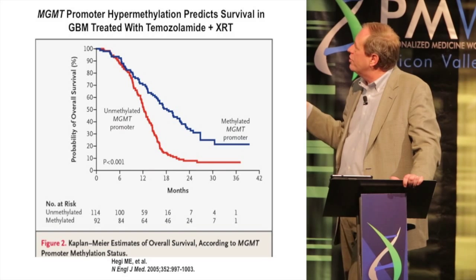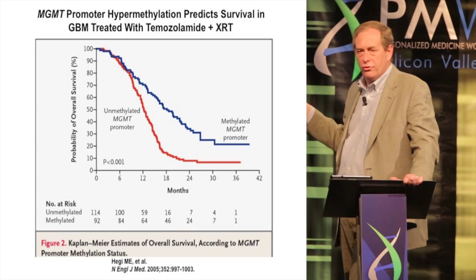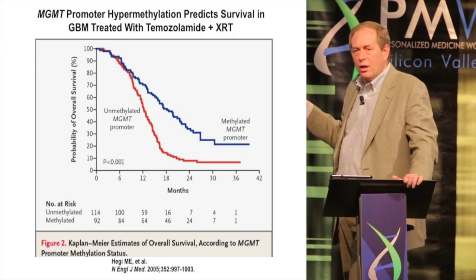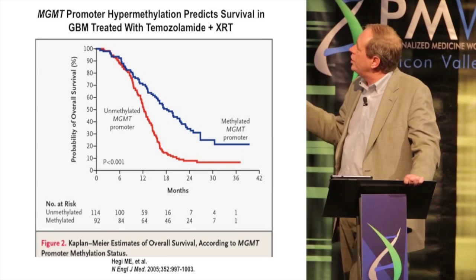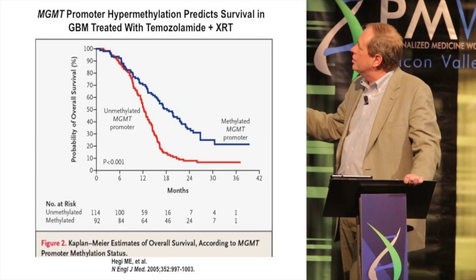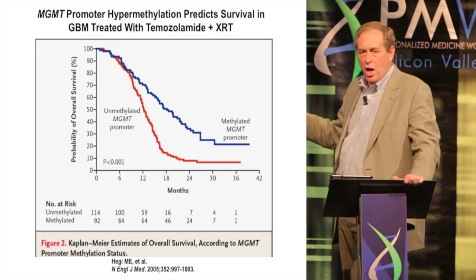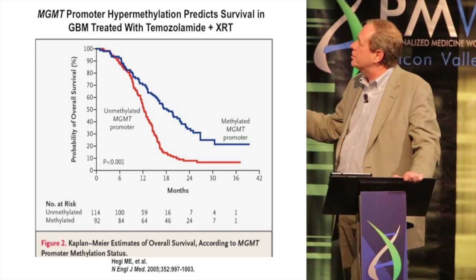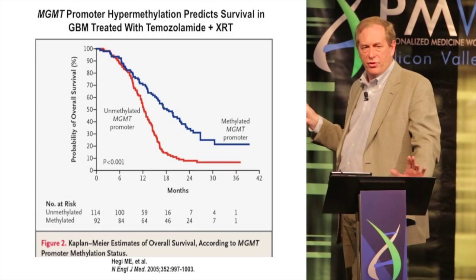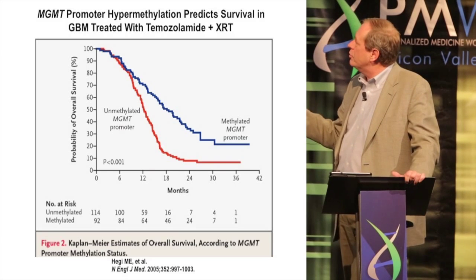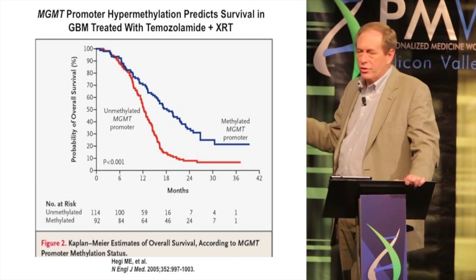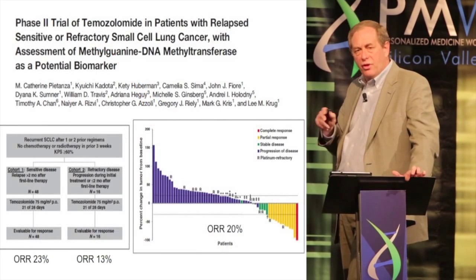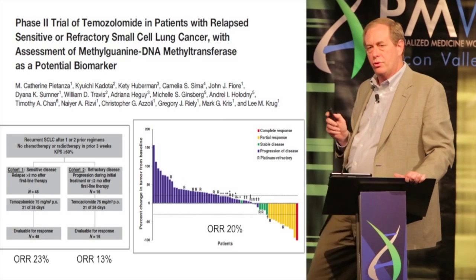A few years later, Monnerat confirmed this with temozolomide — the currently most useful and only really approved drug in brain tumor treatment. It's another alkylating agent, and like BCNU it is specifically repaired by MGMT. They were able to demonstrate that the presence of MGMT methylation correlated with response and improved survival. This is now one specific promoter region methylation change that allows us to distinguish patients who will benefit from temozolomide versus those who will not.